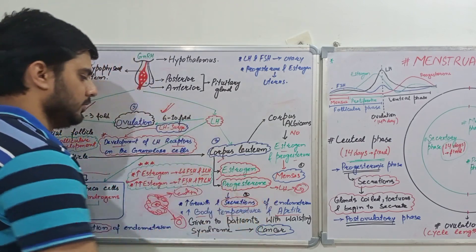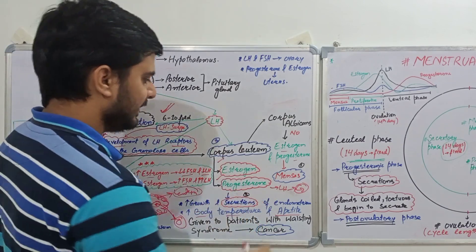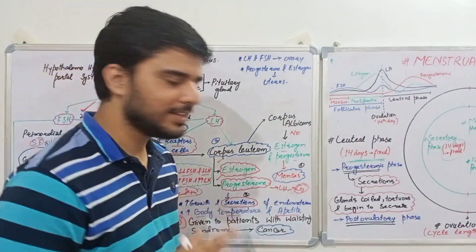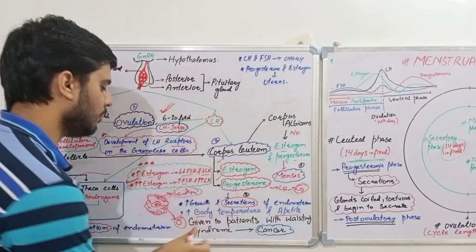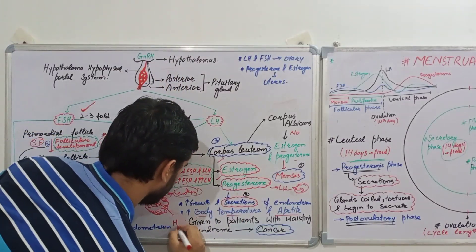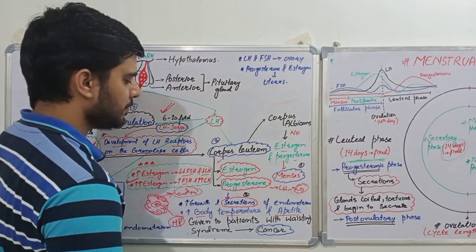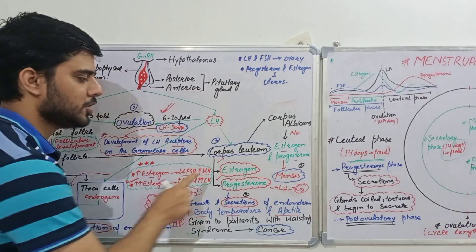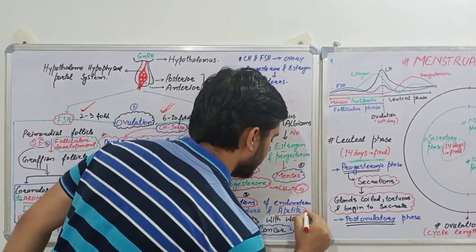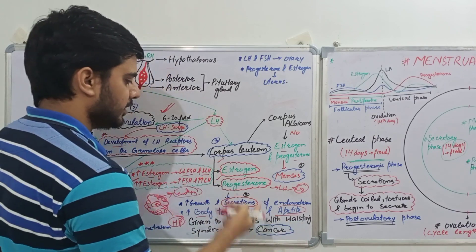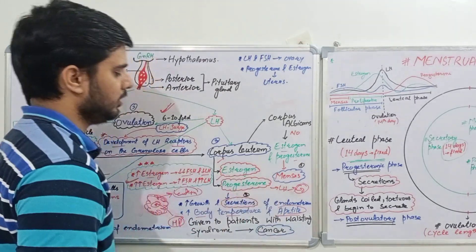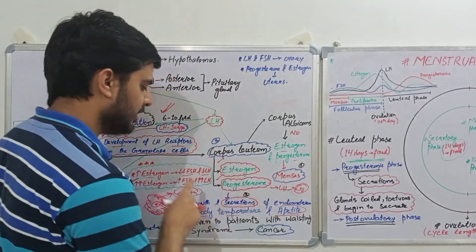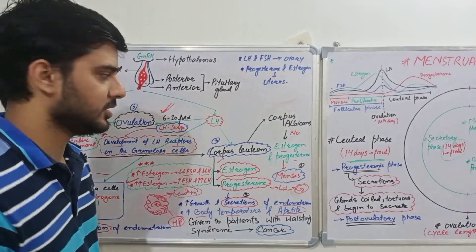An important pharmacological link: in patients with wasting syndrome due to cancer, we give a synthetic form of progesterone known as medroxyprogesterone. We give this because an important function of progesterone is that it increases appetite. So patients with wasting syndrome due to cancer can be treated with medroxyprogesterone. Progesterone also increases body temperature, which is why post-ovulatory phases are characterized by higher body temperature.